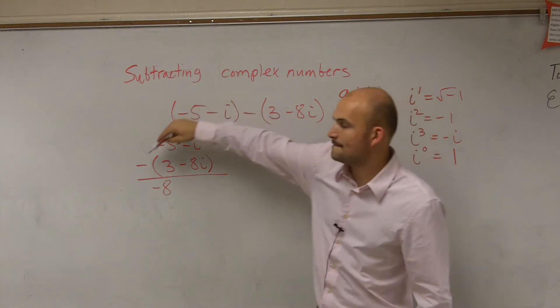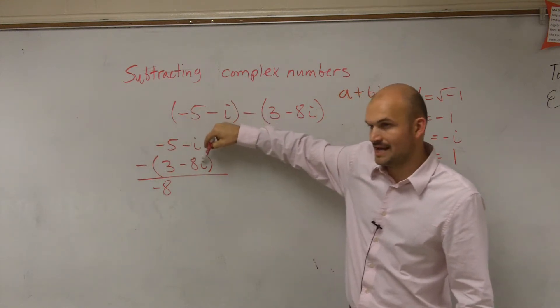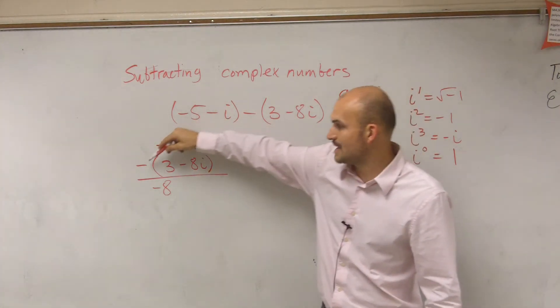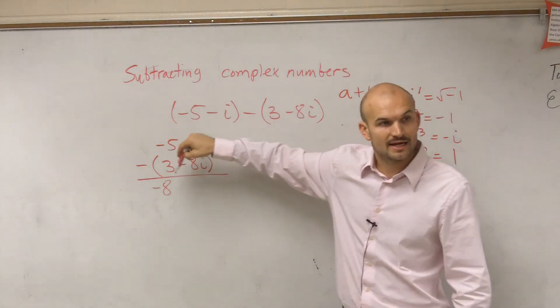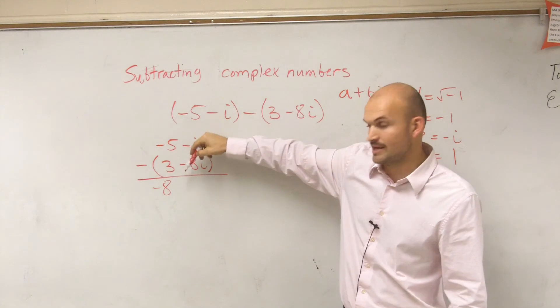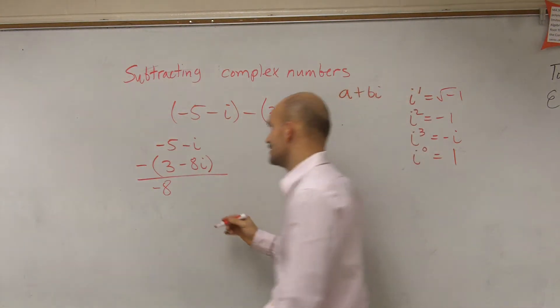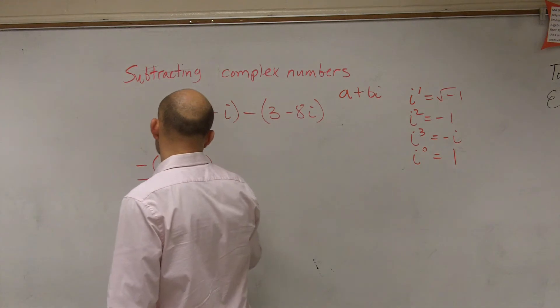Negative i minus a negative 8i. Since they're the same term you can subtract them, but that negative minus a negative 8 is a double negative which is going to make it positive. So negative i minus a negative 8 is going to become plus 7i.